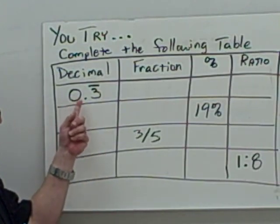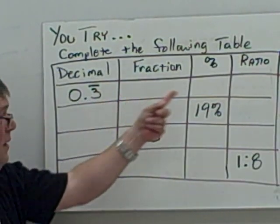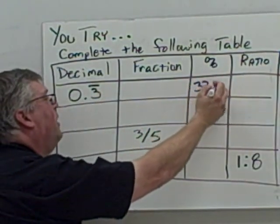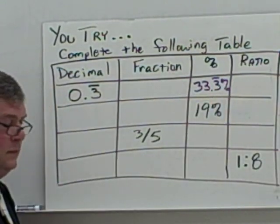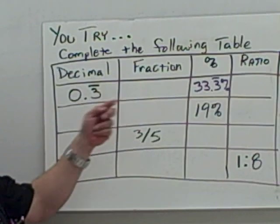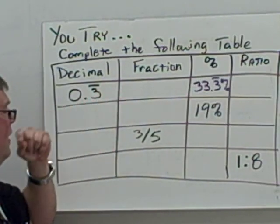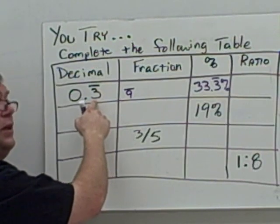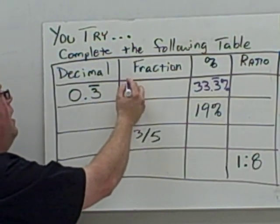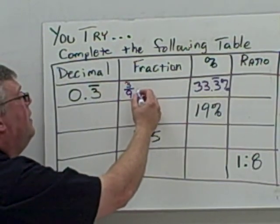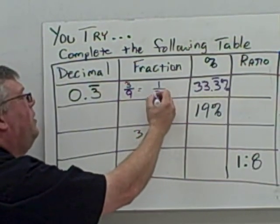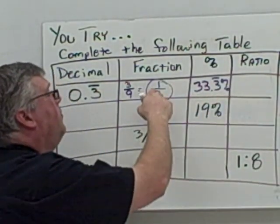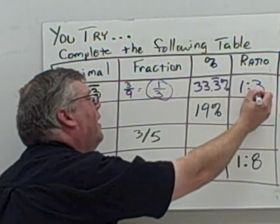0.3 repeating: the easiest conversion for a repeating decimal is to percent — multiply by 100, giving 33.3 repeating percent. For the fraction, one place value is repeating, so it's over one nine on the bottom, and 3 goes on top: 3/9. Both are divisible by three, giving one-third. Converting the fraction to the ratio is simply replacing the fraction bar with a colon: 1 colon 3.